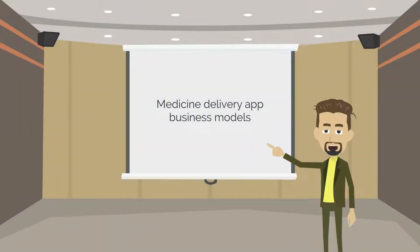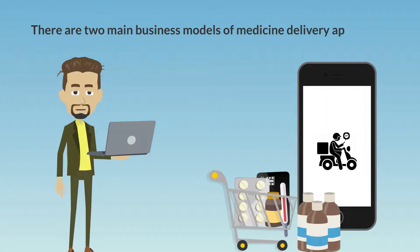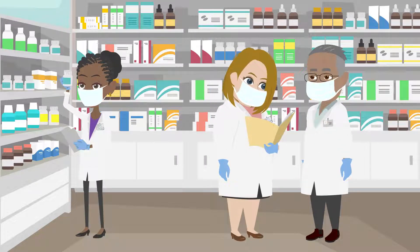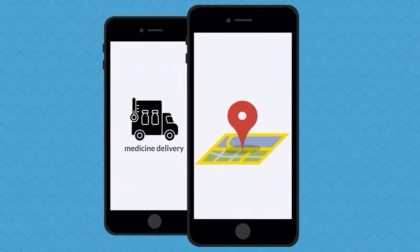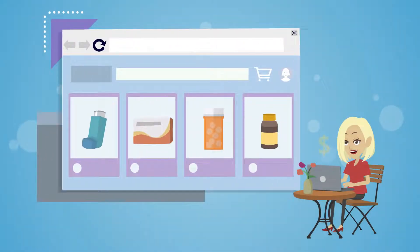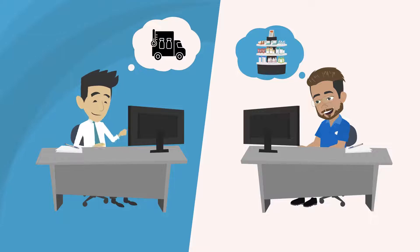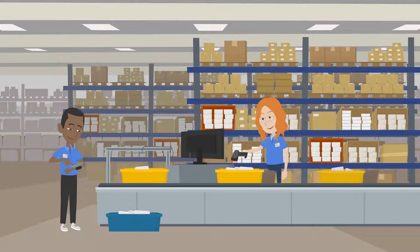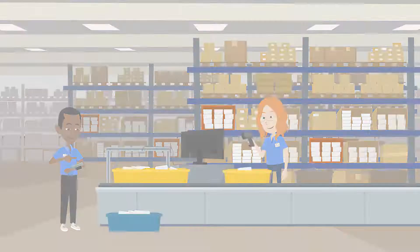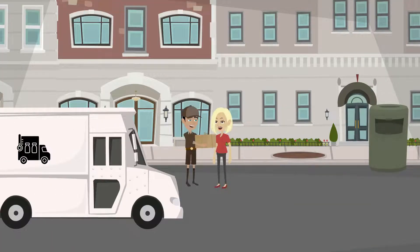There are two main business models of medicine delivery applications. The first is when big pharmacies create such apps for their own business — this model requires a huge inventory of drugs. The other option is when a medicine delivery app acts as an order aggregation system, letting users order drug delivery from third-party pharmacies. The company behind this app doesn't store any drugs at all; it is only responsible for taking orders and sending them to pharmaceutical delivery drivers.